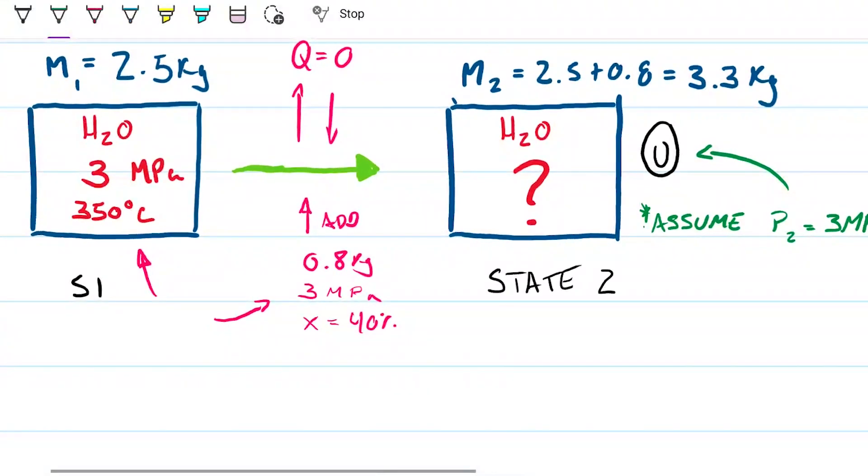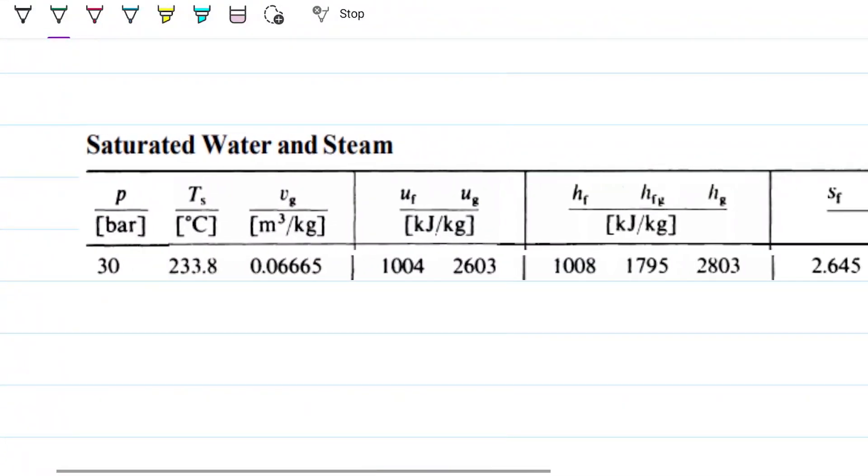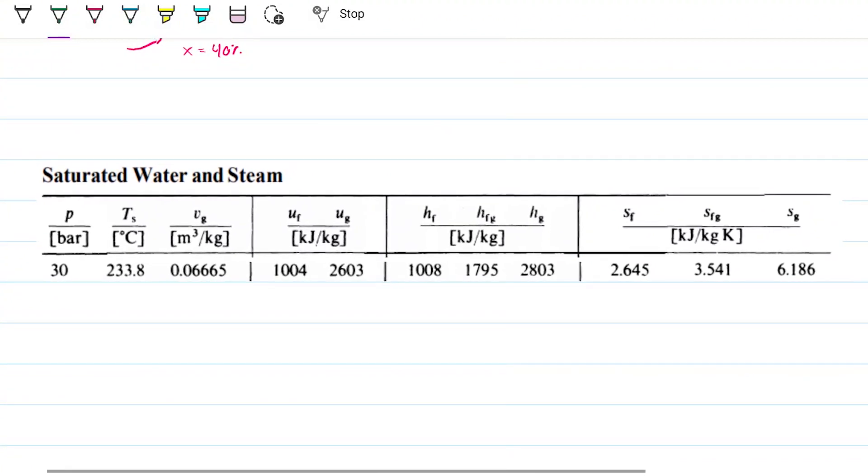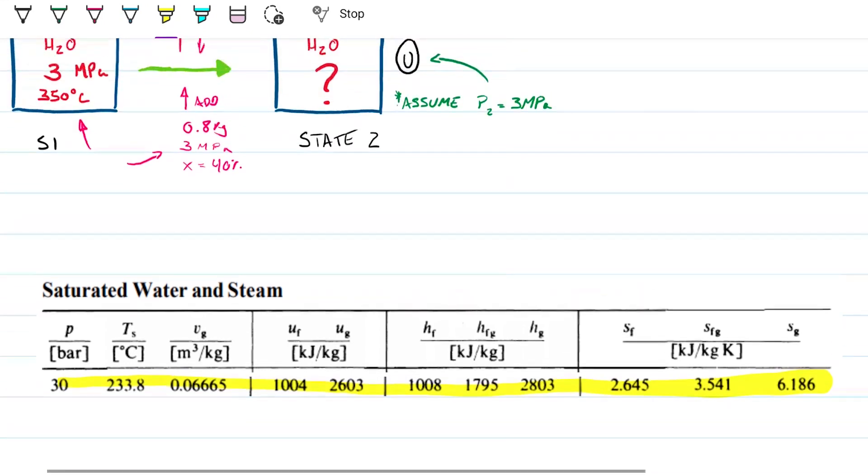So let's start by grabbing the properties for this first state. I'm not going to spend much time here. We've done a lot of this, and there's a lot of videos doing this on the channel. We are at three megapascals and I'm interested in the combination between things here, right? So this is obviously for the added water.